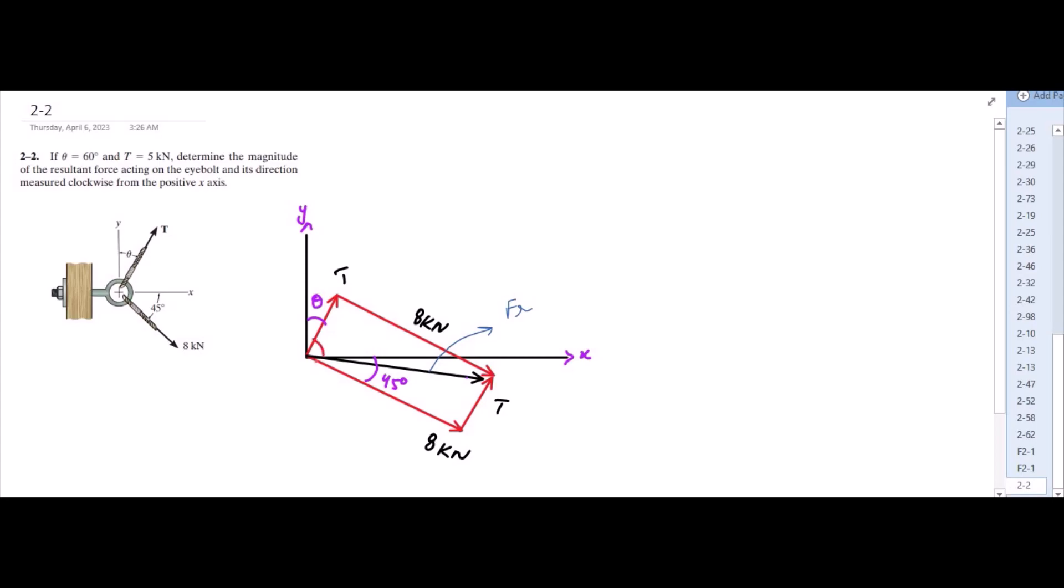So this angle right here is 30 degrees because theta is 60 degrees which is given to us in the problem. Now let us consider that this angle right here is alpha. This angle is also alpha. Let us consider this angle as beta. This angle right here is also beta. Now for alpha, alpha is equal to 30 plus 45 degrees which means it is equal to 75 degrees.